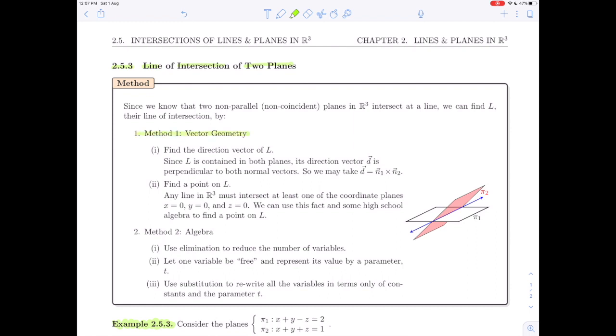In this video we'll do method 1, the vector geometry approach to finding the line of intersection of two planes. In the next video we'll do method 2, a more algebraic approach that will be able to be extended in your next chapter about linear systems where you'll be able to extend the algebraic method to bigger, more complicated situations.